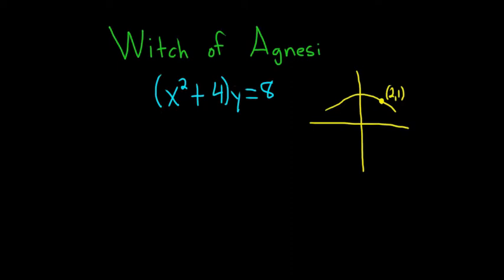In this problem we have a famous curve called the Witch of Agnesi. It's given by this equation and we have to find the tangent line to the curve at this point here, (2,1).